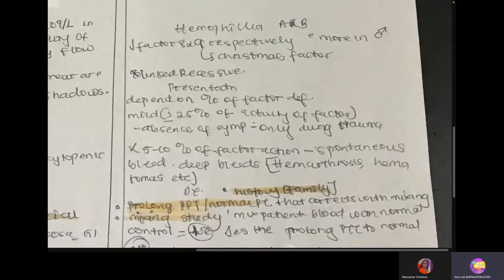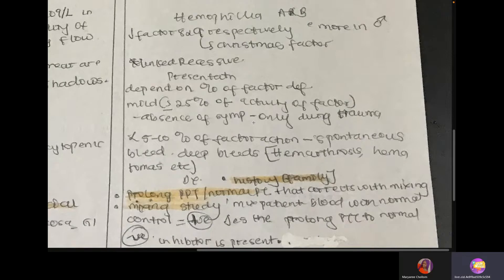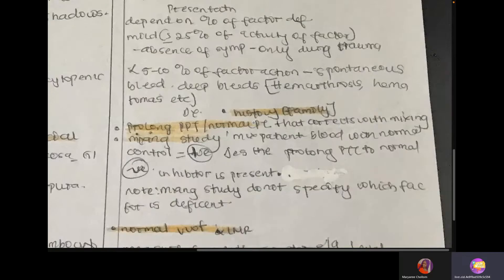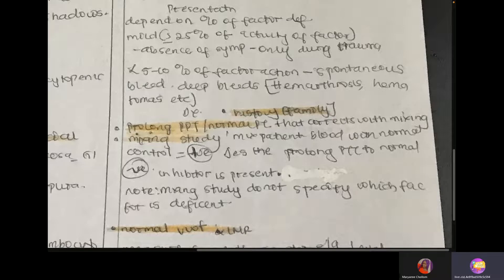How do you diagnose? The first diagnostic criterion is family history. You need to check the history and see if there is an X-linked recessive pattern — for example, if the uncle had this condition before.